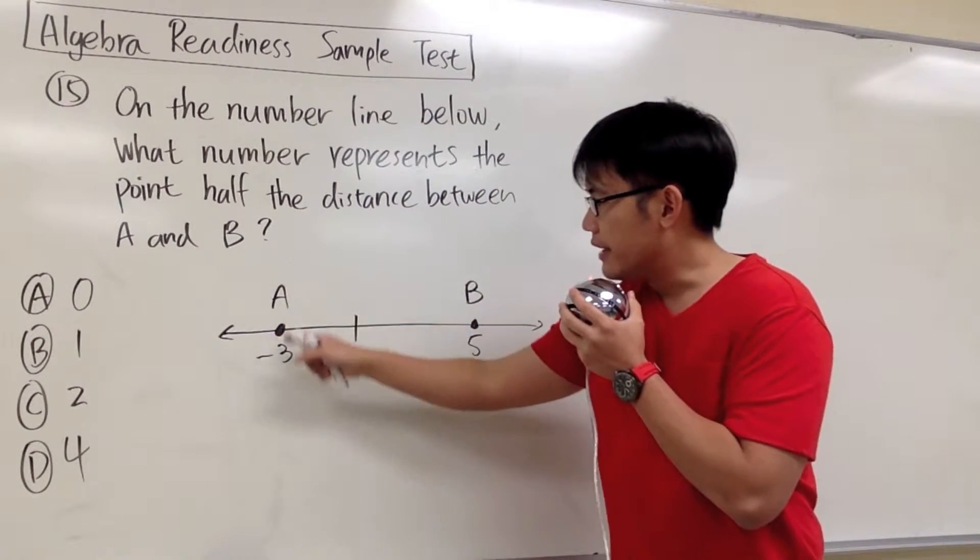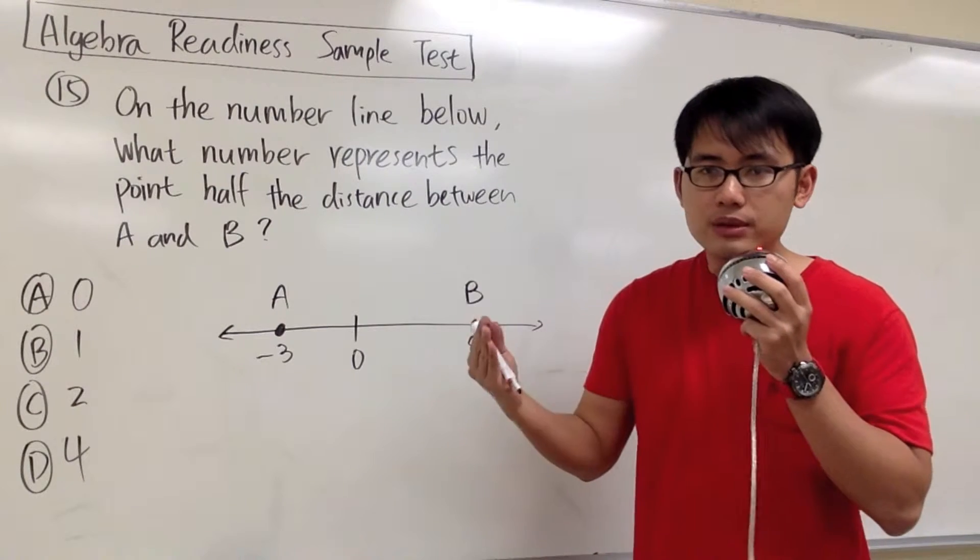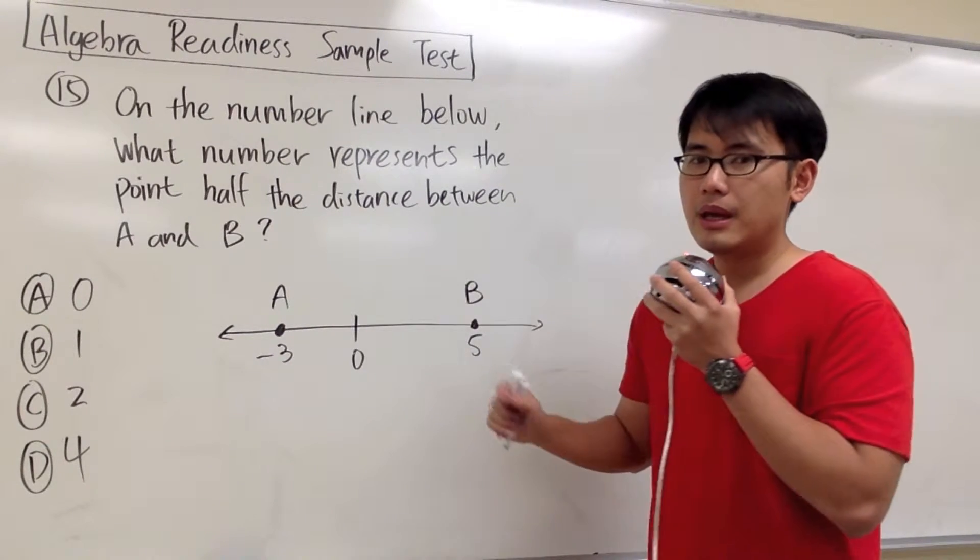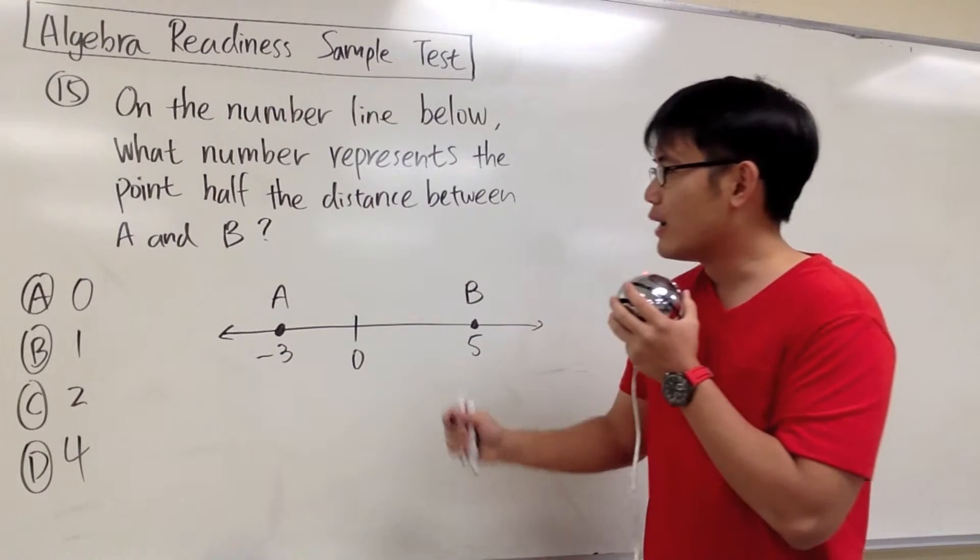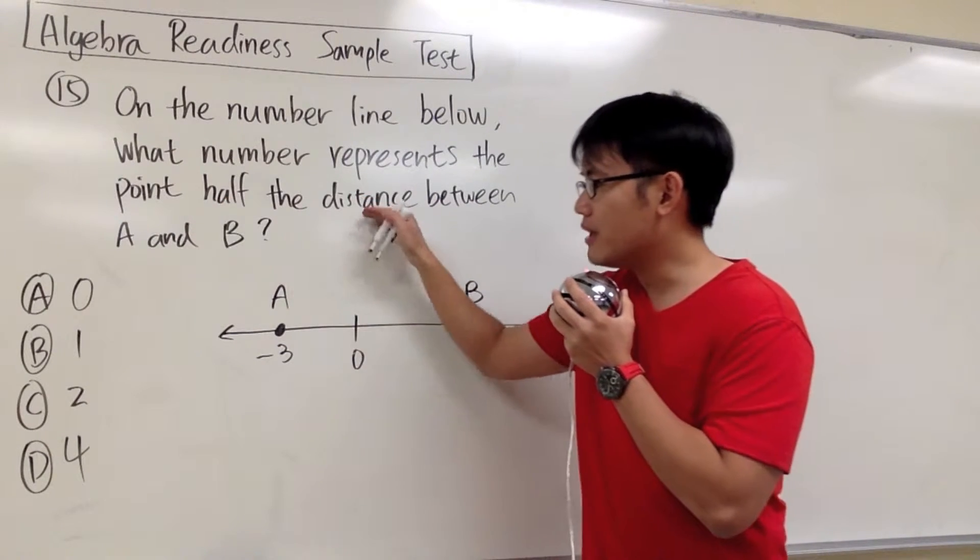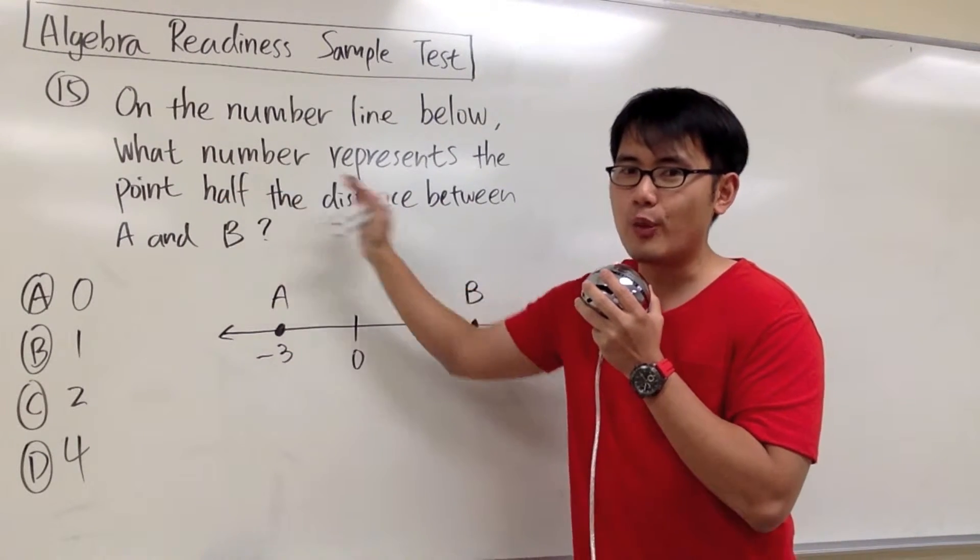First, we know that A and B are the endpoints, and then we are somewhere in between. But then where should we be so that we can be halfway from A and halfway from B?